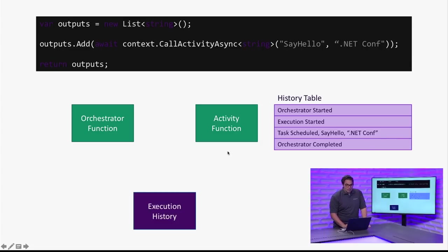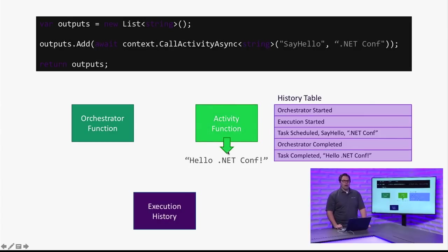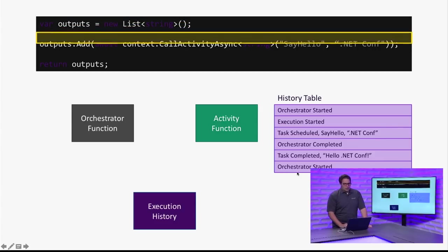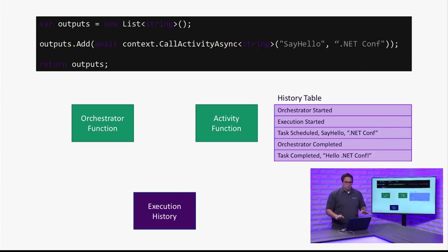Instead, our activity function wakes up and it's like, oh hey, I have some work to do. It looks at its work and says: I need to say hello to .NET Conf. So it says hello .NET Conf, and it goes ahead and updates the execution history — hey, I did my job. Now, this is the most important part: the orchestrator knew it needed to get some work done. The activity function did the work and let the orchestrator know it's finished.